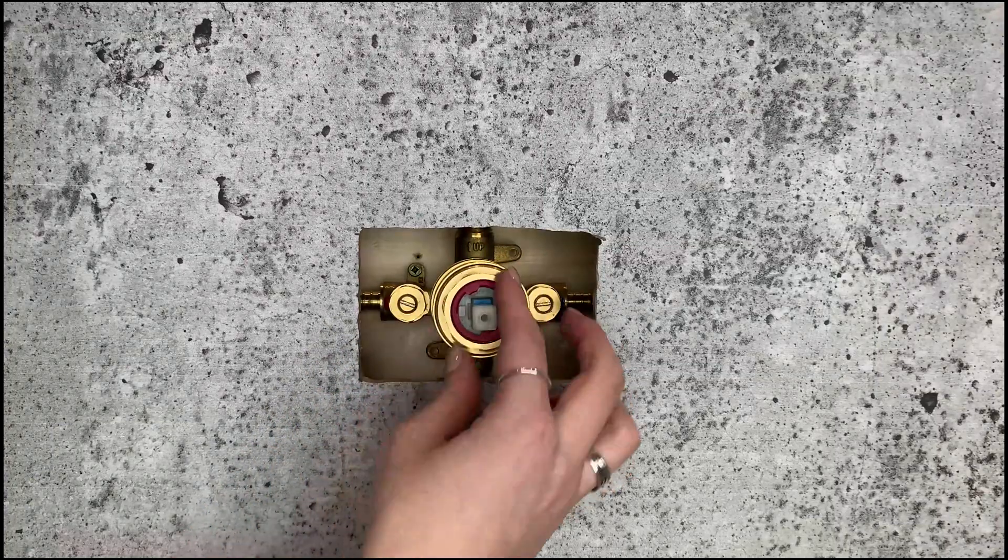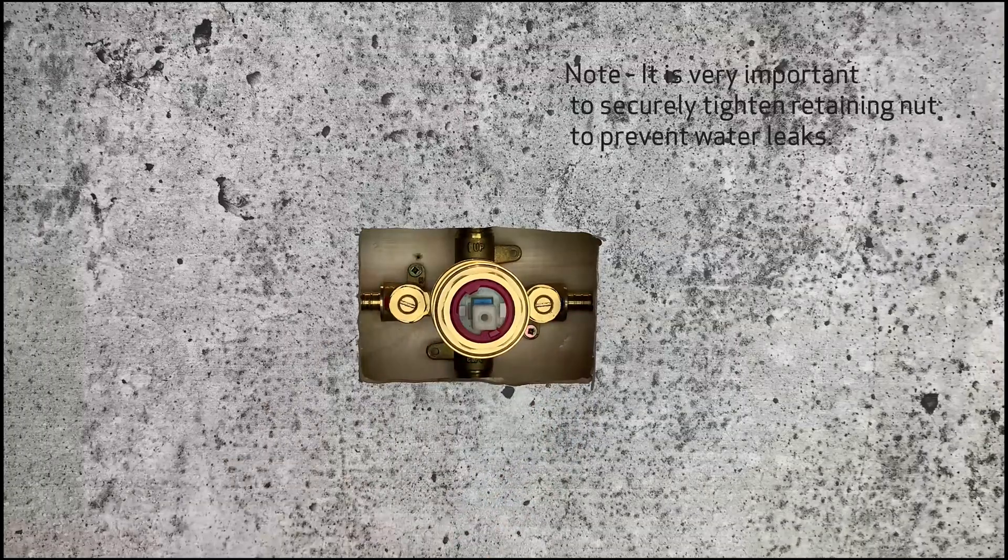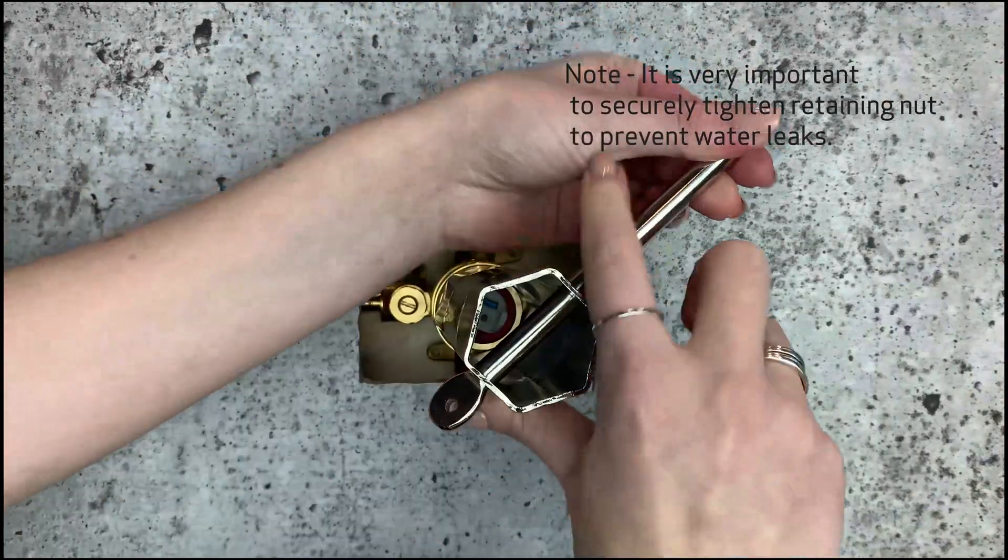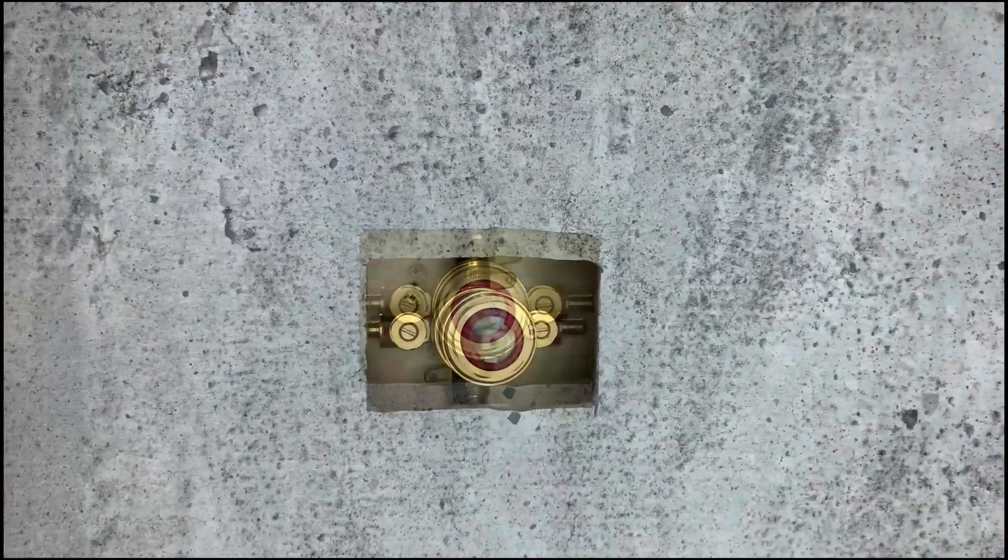You can now replace the retaining nut. Remember, this is the part that holds the cartridge firmly in place and ensures that the valve doesn't leak, so it's really important that it's tightened securely using a plumber's or crescent wrench.